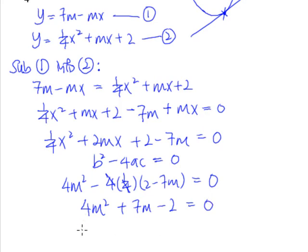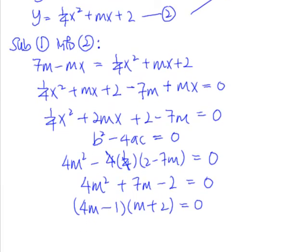So what we do next is we'll factorize and we get 4m minus 1 m plus 2 is equal to 0. So from here, we will know that our m will be equal to positive 1 quarter or negative 2. And this will be the answer.